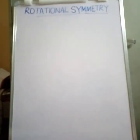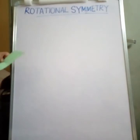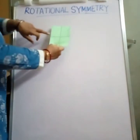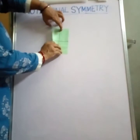A line that divides a figure into two identical halves is called the axis of symmetry, or the line of symmetry, and the figure is said to be symmetrical. For example, this rectangle — if we fold it like this, both parts coincide.